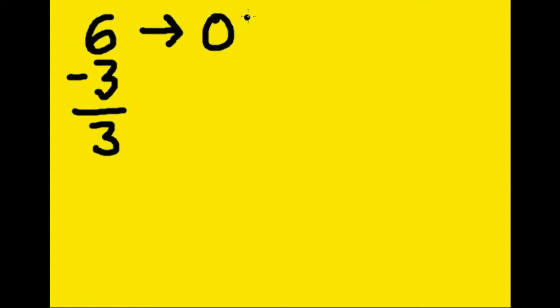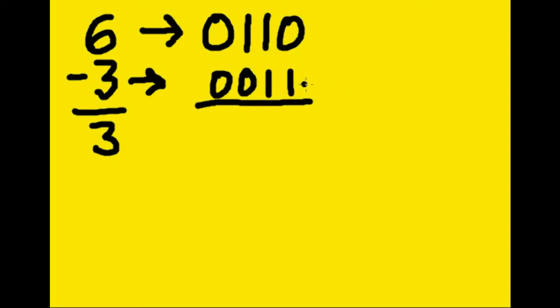One's complement. Now, six minus three is equal to three. Six in binary would be written as zero one one zero—the four, two, and one bits. Four and two is six. Three is written as zero zero one one—the two bit and the one bit. Two and one is three. I'm going to take the subtrahend, that's this guy here.